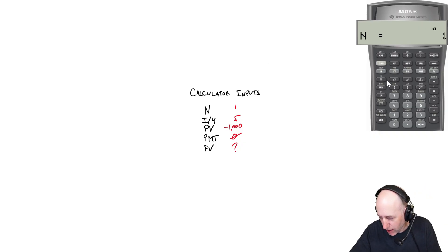So I put 1 N. I put 5 IY. I put 1,000 negative PV. PMT, I put in as 0. And then I'm going to do this. I think I go compute FV. Yeah. Compute FV. And you can see it's 1050. So CPT FV. It's been a while since I've used my financial calculator. And you can see it's 1050.